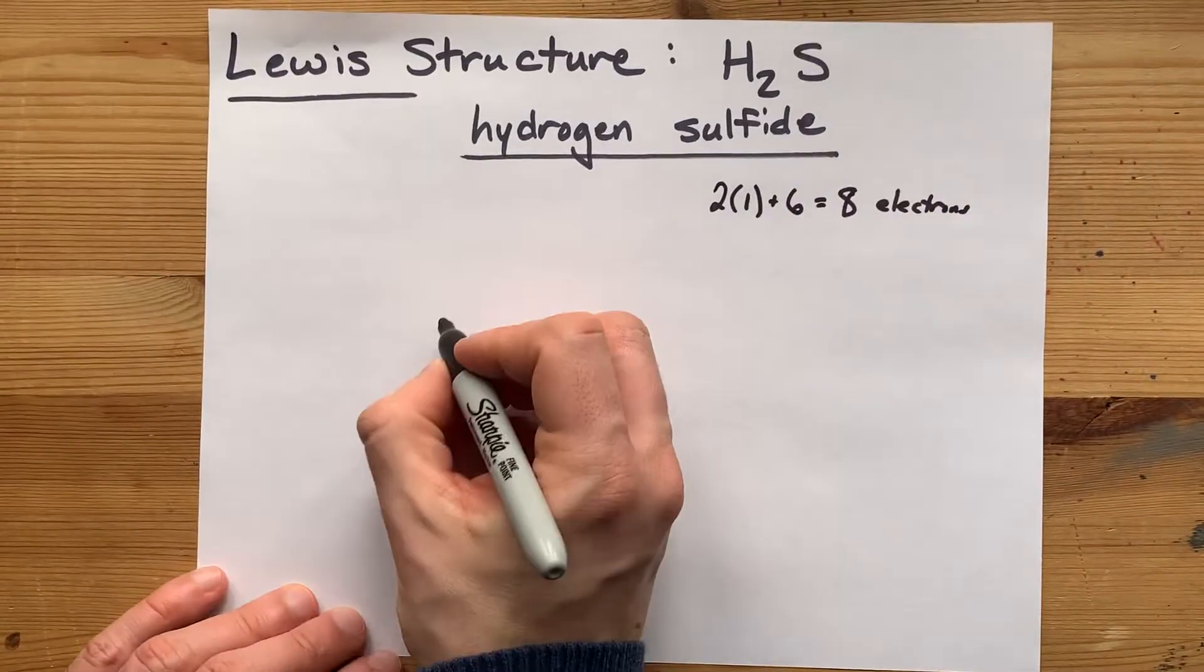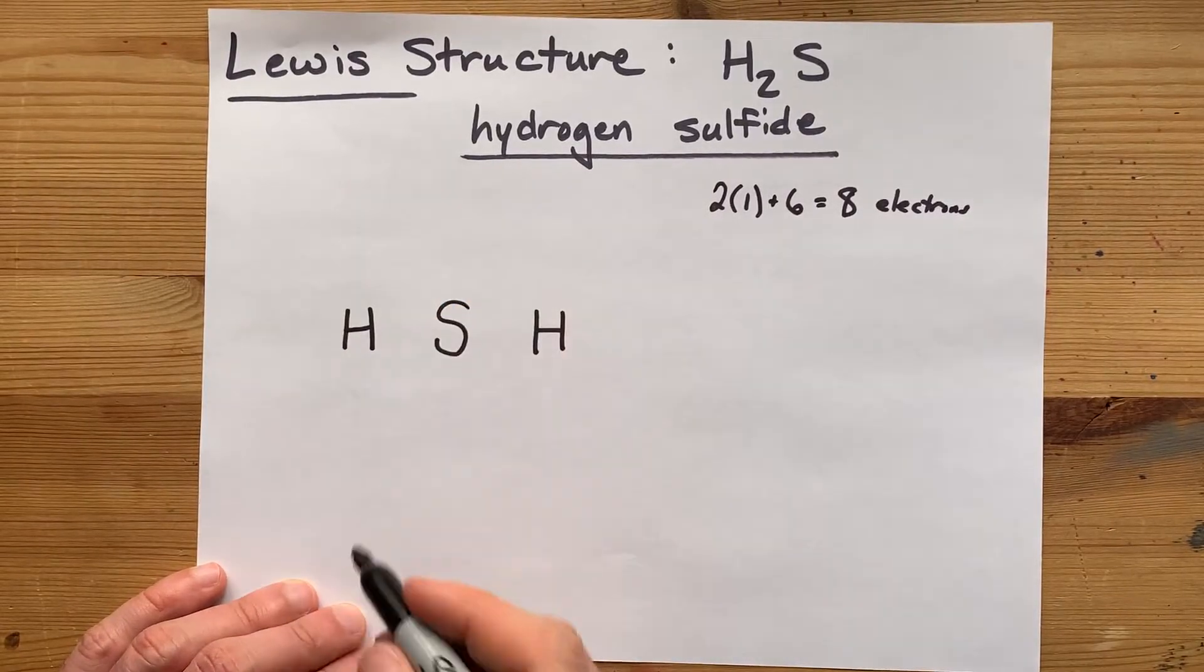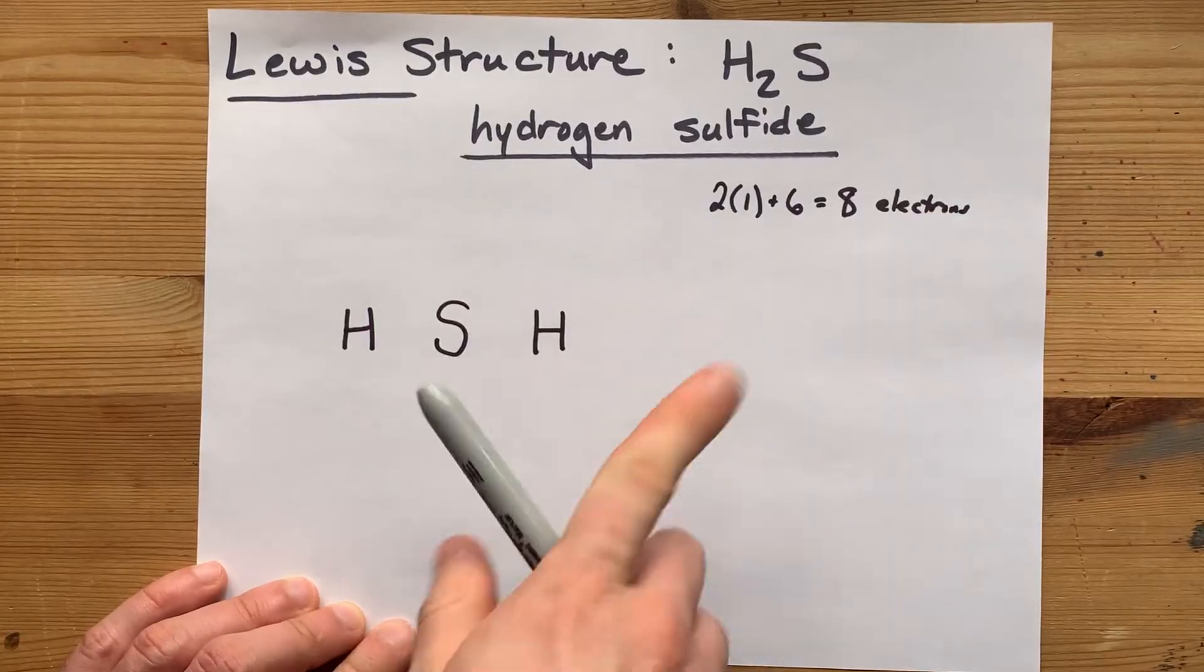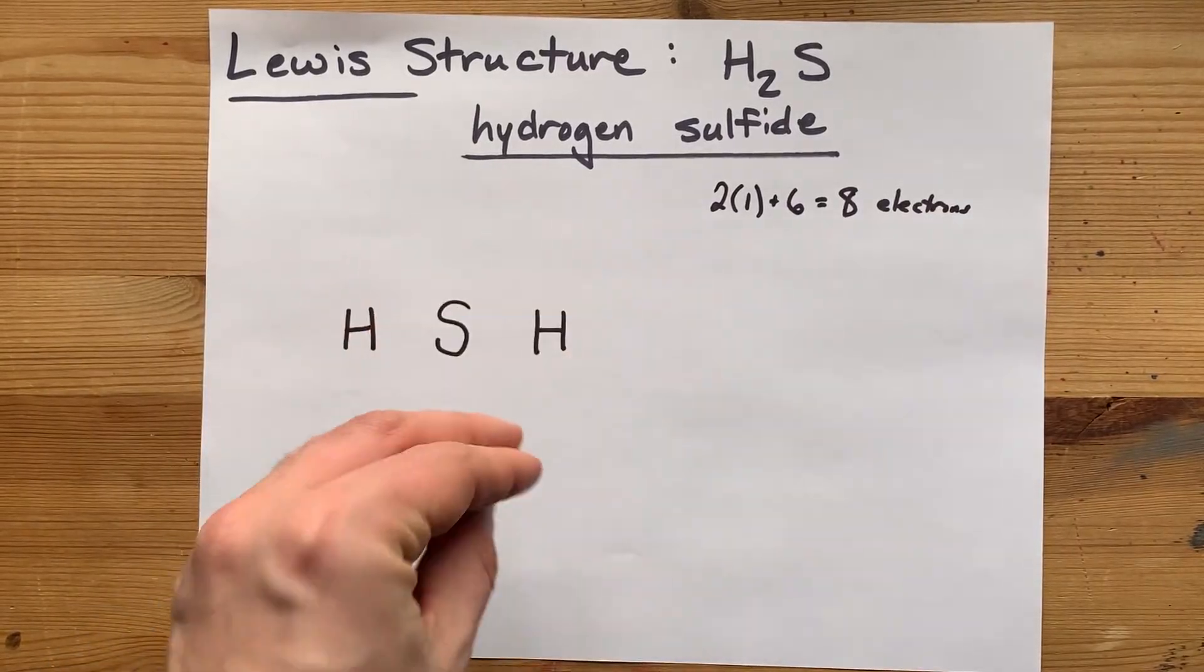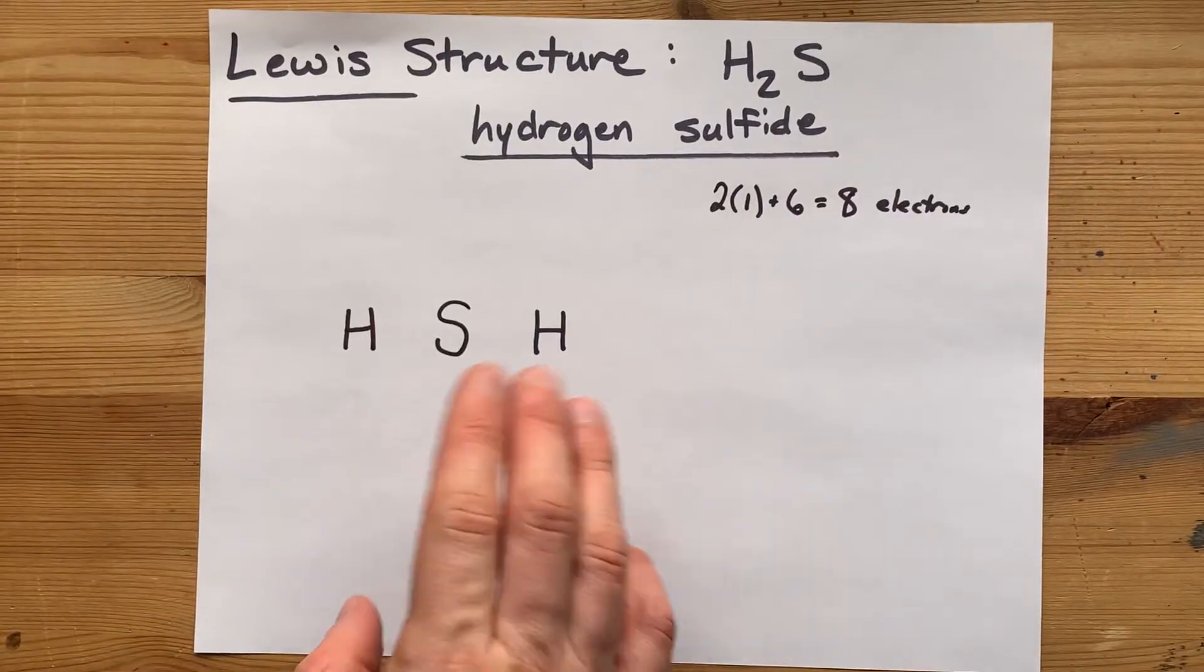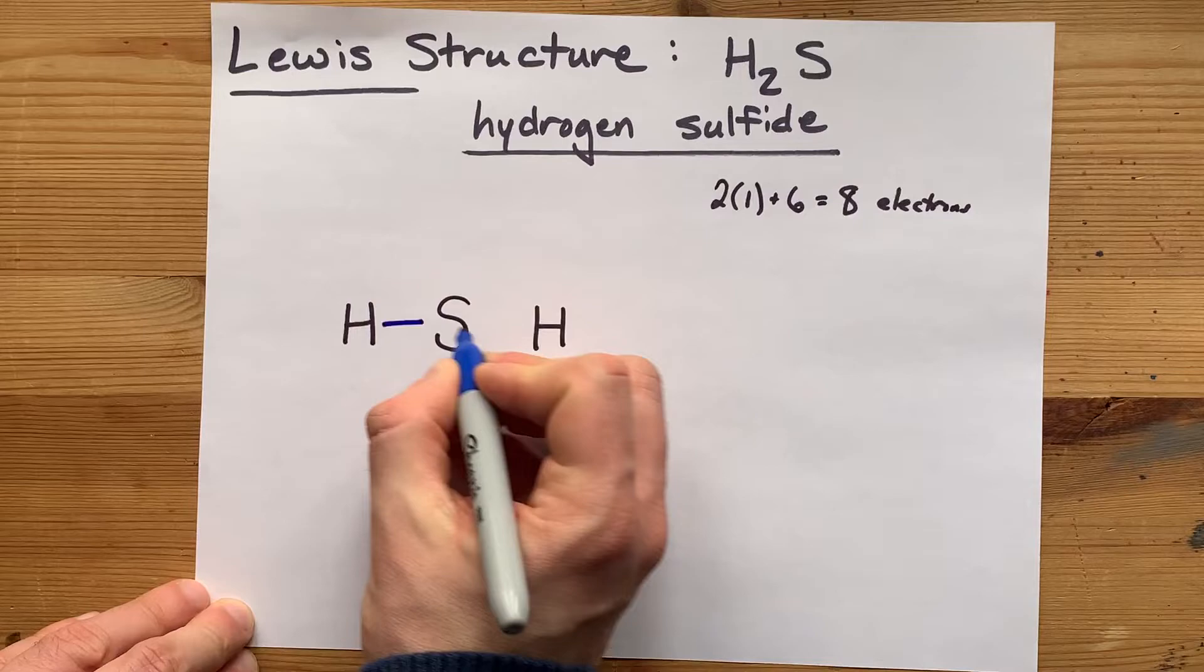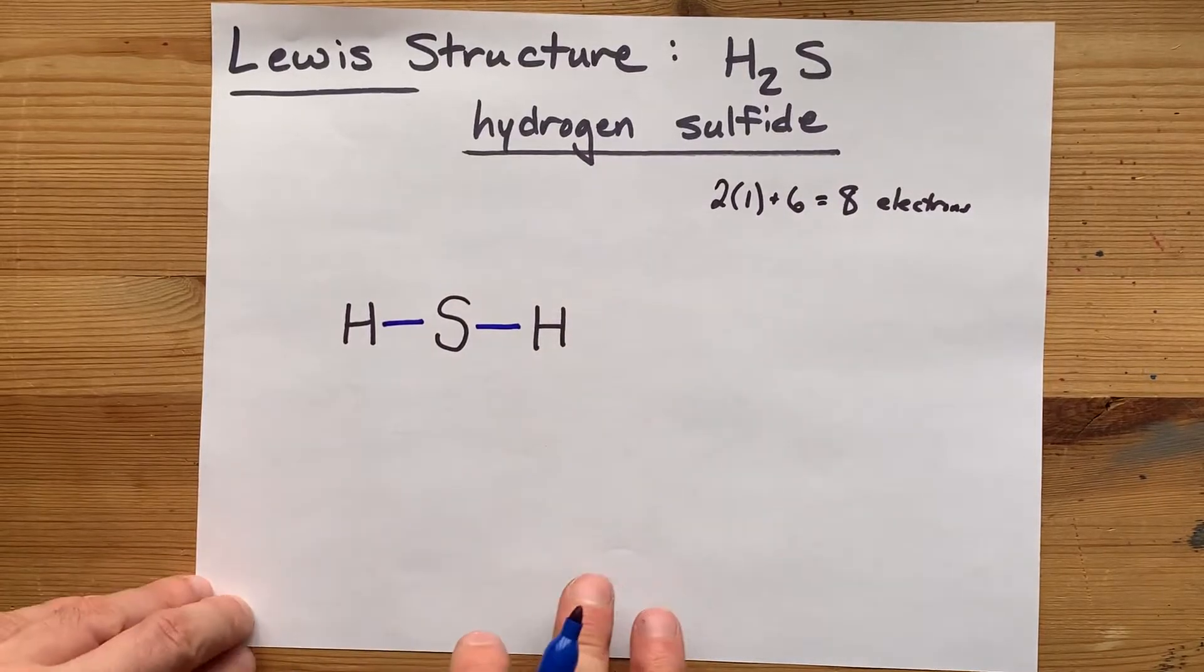I'm going to put my sulfur in the center, and I'm going to surround it with hydrogens. The way that I draw covalent or Lewis structures between non-metals is to, step one, bond all of my outer atoms to my central atom for four electrons total.